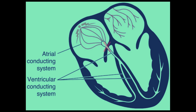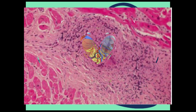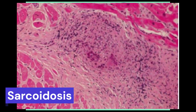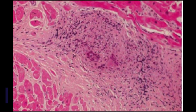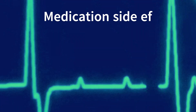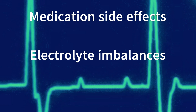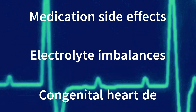Third-degree heart block is most commonly caused by damage to the conduction system of the heart, such as in cases of myocardial infarction, degenerative diseases, or inflammation of the heart muscle. Other causes include medication side effects, electrolyte imbalances, or congenital heart defects.